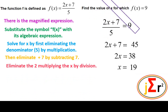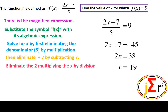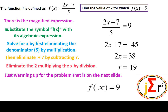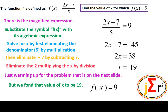x = 19 is the value of x for which f(x) = 9. We are highlighting this result. f(x) = 9 means x = 19, which means that f(19) = 9. We should bear this in mind for the next slide.